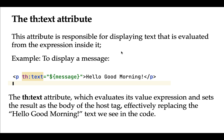Hi everyone, welcome back. In this lecture we'll take a look into the th:text Thymeleaf attribute. This attribute is responsible for displaying text that is evaluated from the expression inside it. For example, as you can see in this code snippet, we are using the th:text attribute and then using a variable expression — that is, dollar within curly braces — passing the message attribute name.